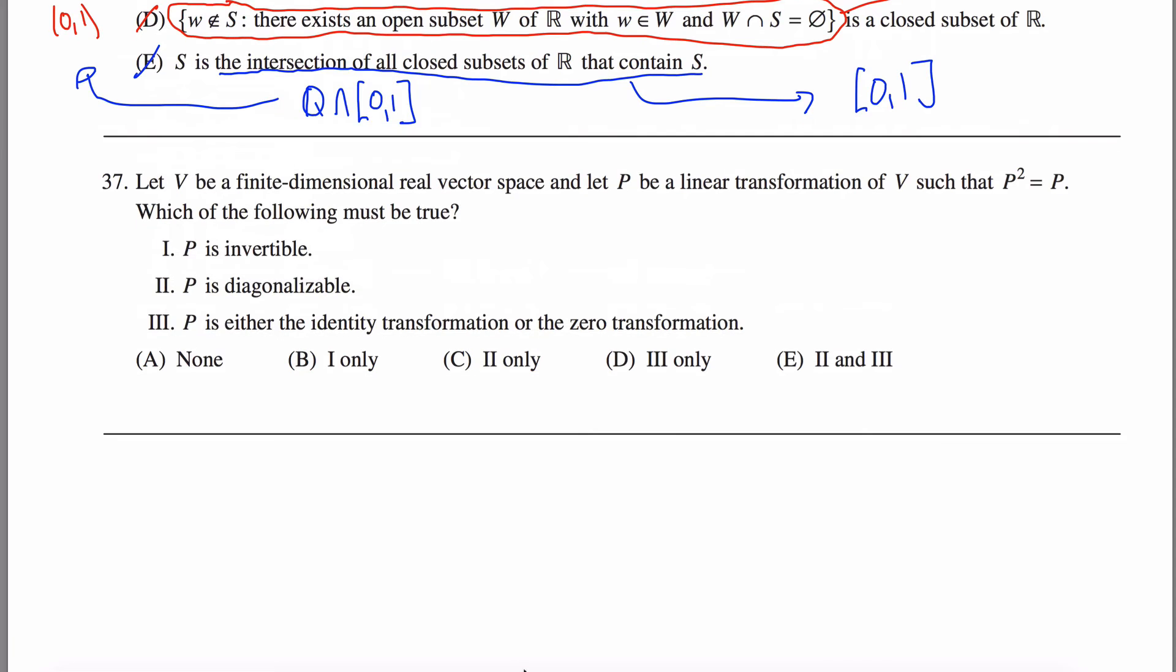What this tells you is that P is what's called a projection. In fact, this is the definition of what it means to be a projection, which kind of makes sense. When you get into too many dimensions, it's hard to picture.